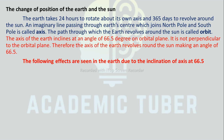The change of position of the Earth and the Sun: The Earth takes 24 hours to rotate about its own axis and 365 days to revolve around the Sun. An imaginary line passing through the Earth's center joining the North Pole and South Pole is called the axis. The path through which the Earth revolves around the Sun is called its orbit. The axis of the Earth is inclined at an angle of 66.5 degrees on the orbital plane — it is not perpendicular to the orbital plane. Therefore, the axis of the Earth makes an angle of 66.5 degrees as it revolves around the Sun.